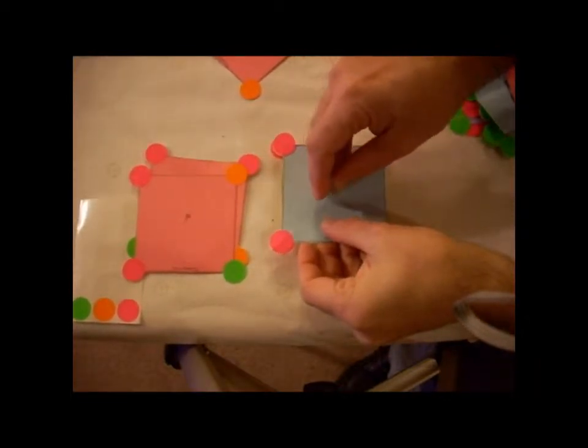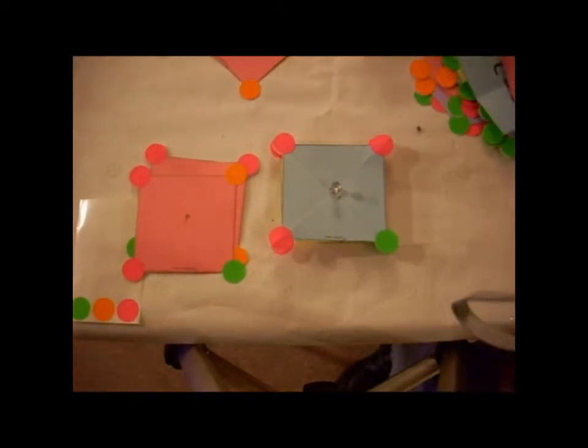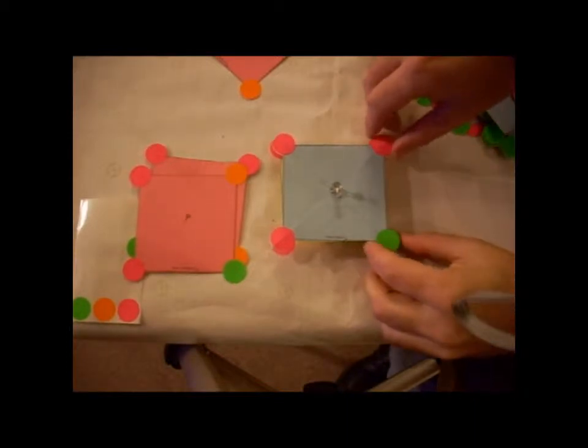So first, as we always want to do, we want to look for the high-order rotation axis. And we want to see if we have a C2 anymore, or a C4. So first, let's look for the C4.